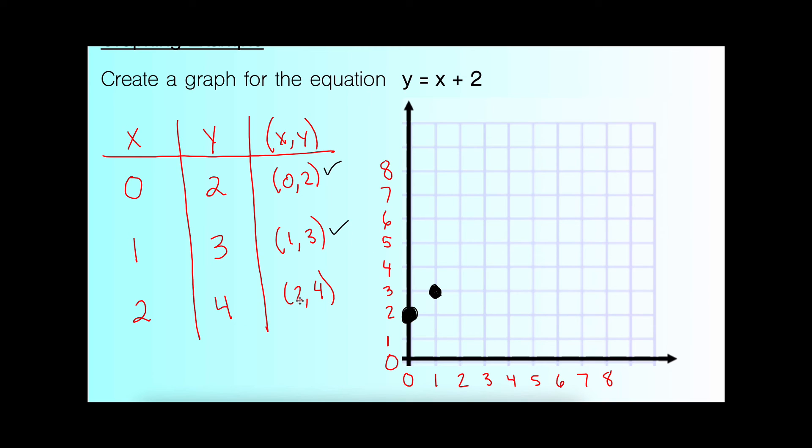And then my last point appears at 2, 4. So I start at the origin. The first point tells me to move over 2. 1, 2. And then I go up 4. 1, 2, 3, 4. And there we go.